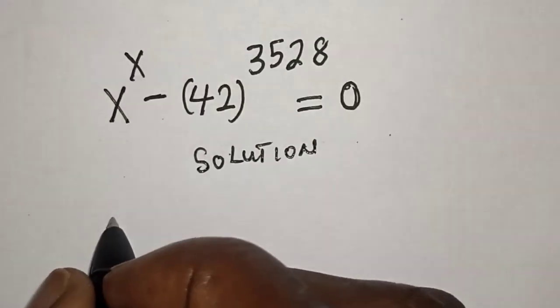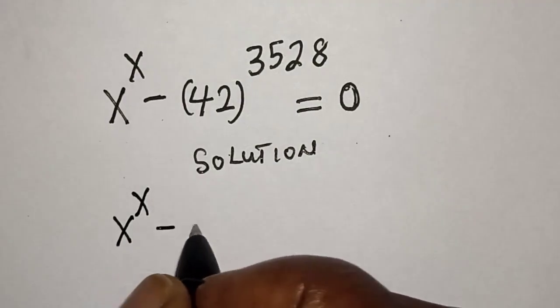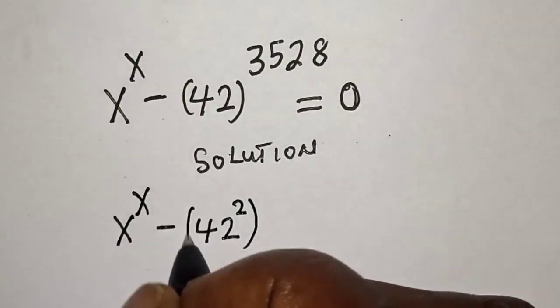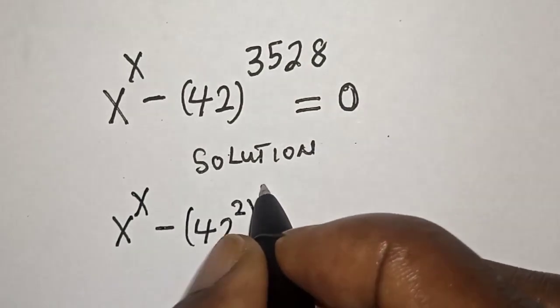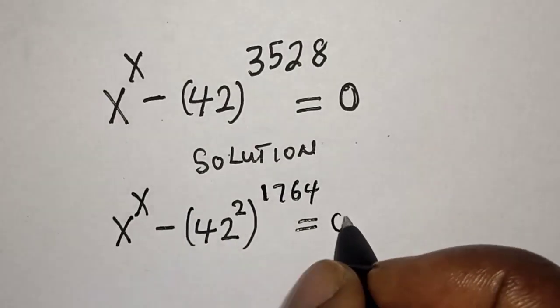Then this is x raised to power x minus 42 squared, raised to power 1764, is equal to 0.